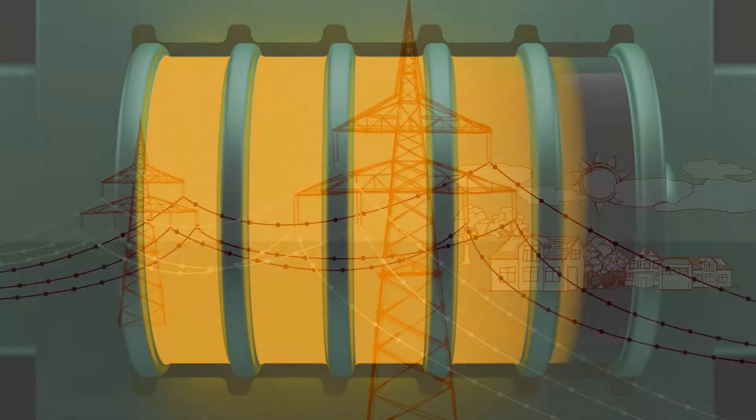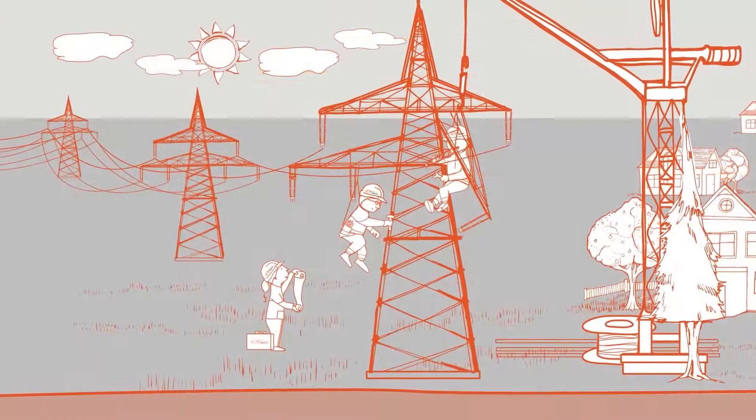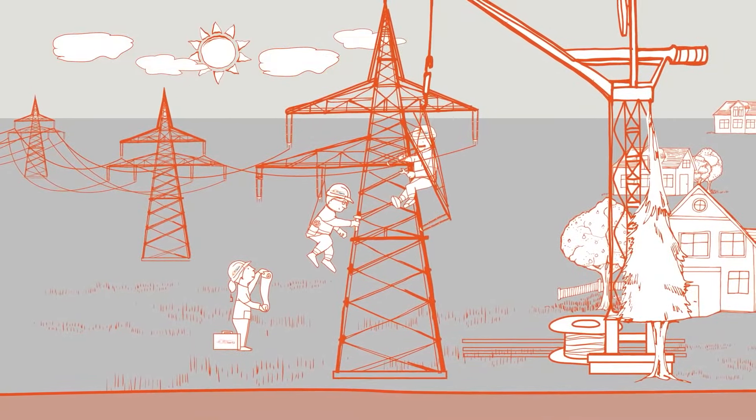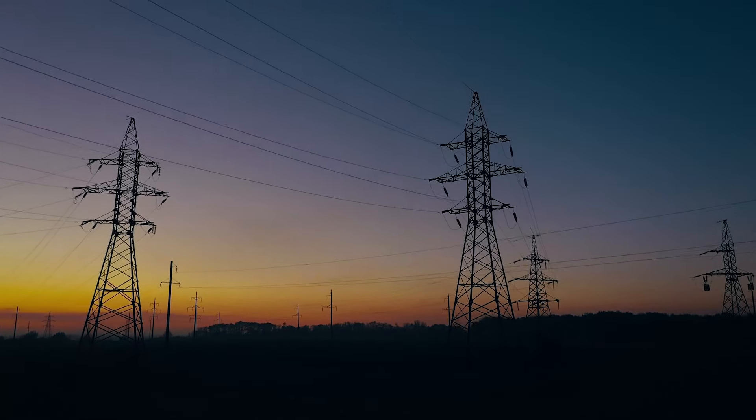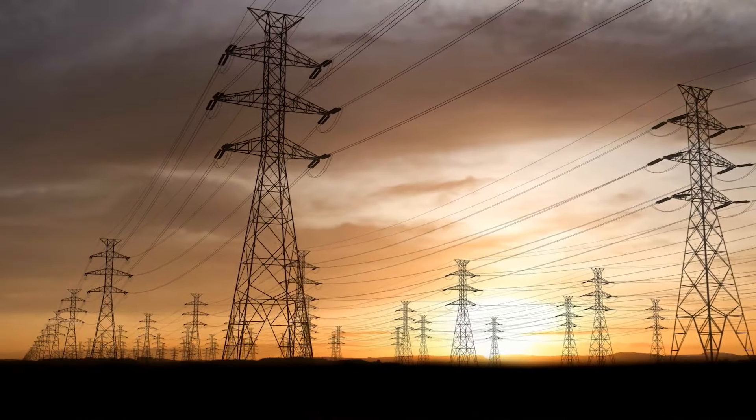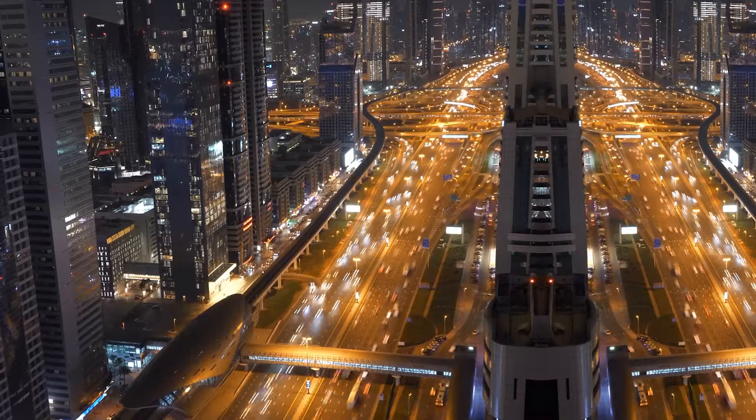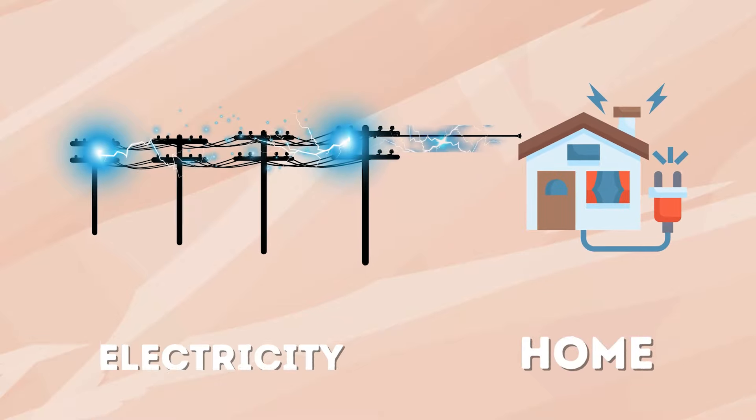These lines crisscross neighborhoods and communities making the electricity available for all our daily needs. Distribution lines are designed to be reliable and resilient with safeguards to prevent power outages. They play a crucial role in ensuring that we have access to electricity whenever we need it, keeping our lives running smoothly.